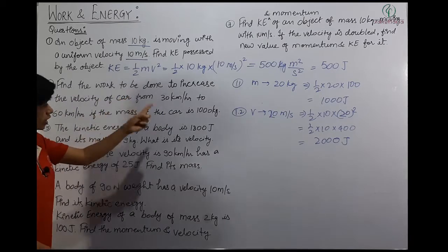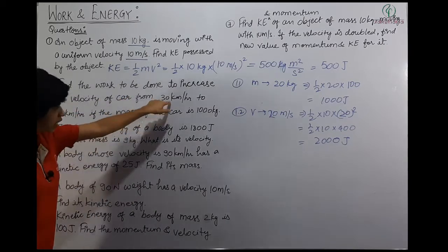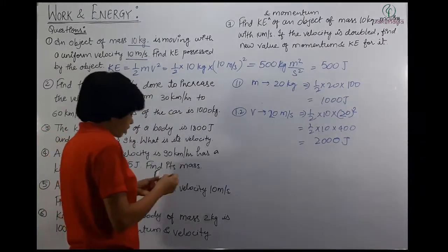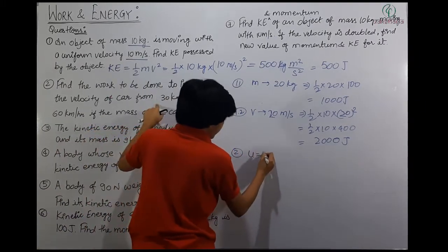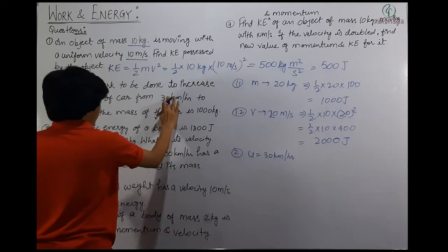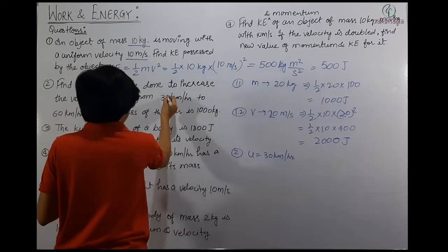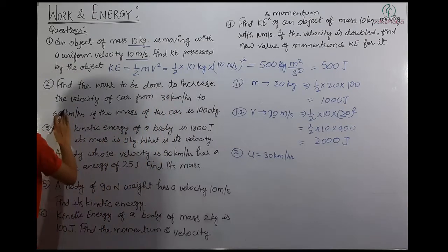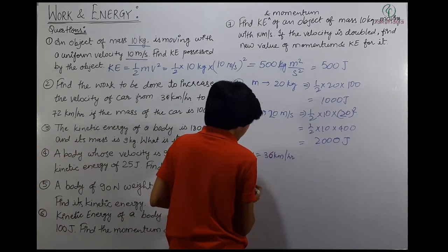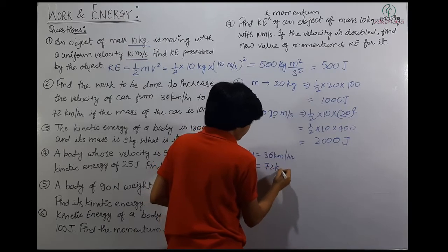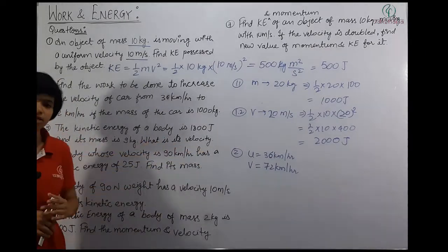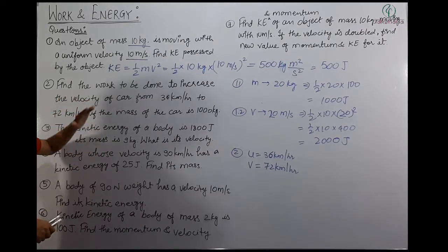Next question: find the work to be done to increase the velocity of a car from 30 km/h to 60 km/h if the mass of the car is 1000 kg. The initial velocity is given as 36 km/h and final velocity is 72 km/h, and you are asked how much work should be done to increase the velocity from 36 km/h to 72 km/h.